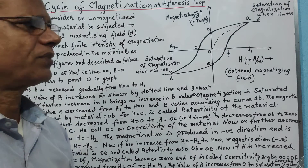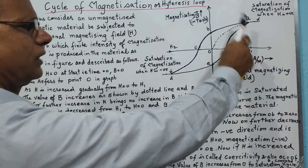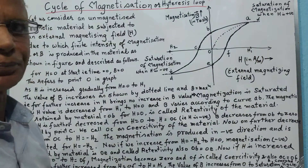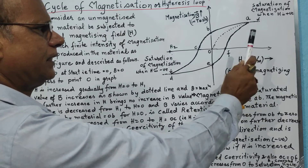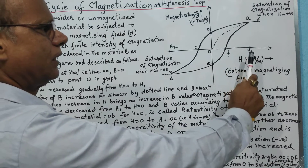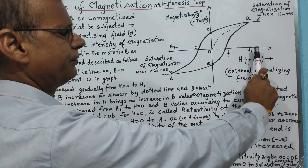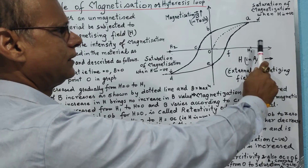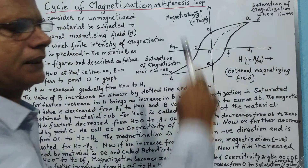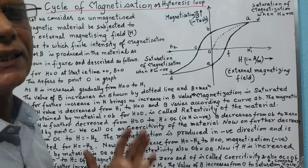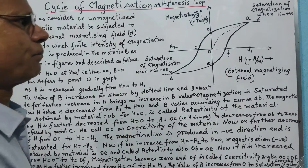The saturation of magnetization takes place at point A for a given external magnetizing field H1. If we increase the external magnetizing field beyond H1, the intensity of magnetization still does not increase — therefore we call it saturation of magnetization.